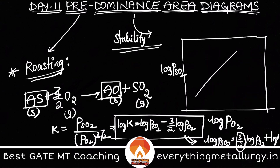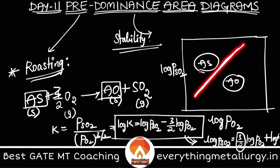Drawing a positive slope line divides the diagram into two regions — let's say sulfide on one side and oxide on the other. This is how the predominance area diagram is used extensively for roasting. The line represents the equilibrium between reactants and products. Any point on this line represents the equilibrium relationship between them.